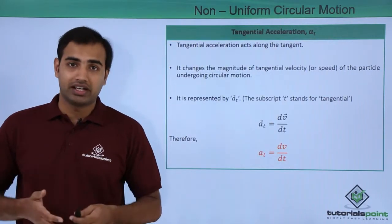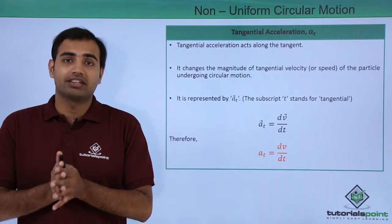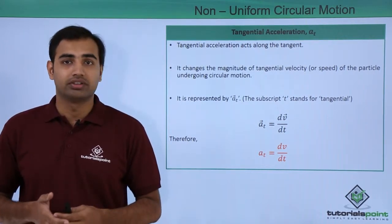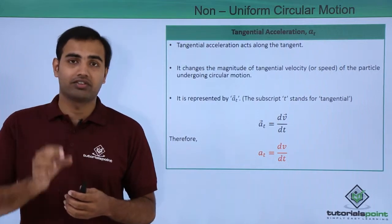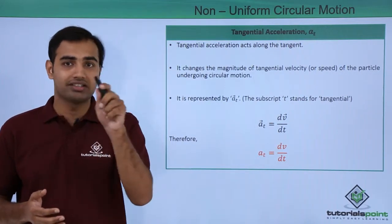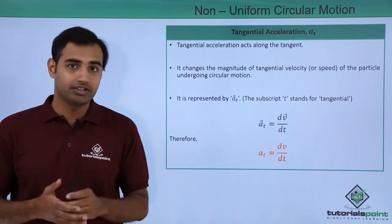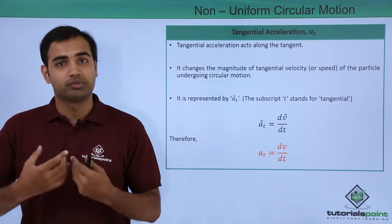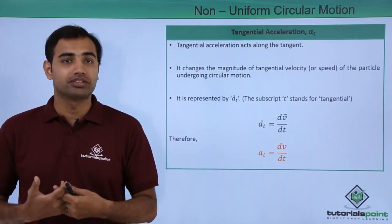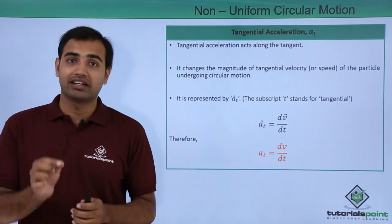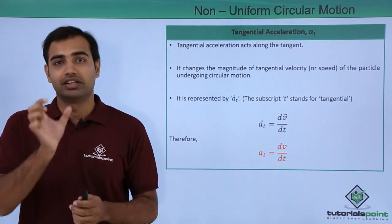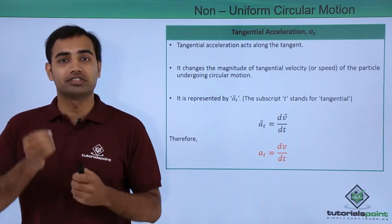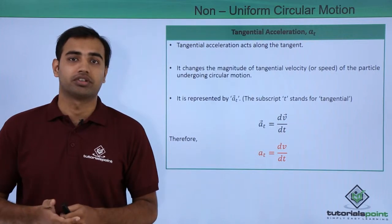First, talking about tangential acceleration — this acceleration acts along the tangent of the circle. As you already know, the linear velocity in circular motion is tangential. So if this acceleration also acts tangentially, it will end up being either parallel or anti-parallel to the velocity. In that situation, this acceleration will directly affect the magnitude of the instantaneous velocity, or the speed, which was constant in uniform circular motion.